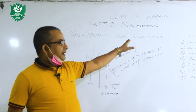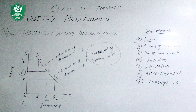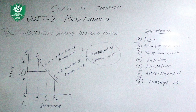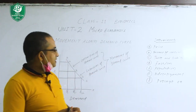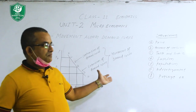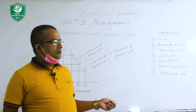We know that demand is a function which increases or decreases due to various factors. There are different types of determinants for increasing or decreasing demand. The first determinant is price, the second is income of the consumer, the third is taste and habits, the fourth is fashion, the fifth is population, the sixth is advertisement, and the seventh is prestige.